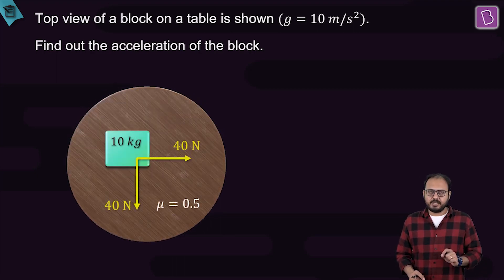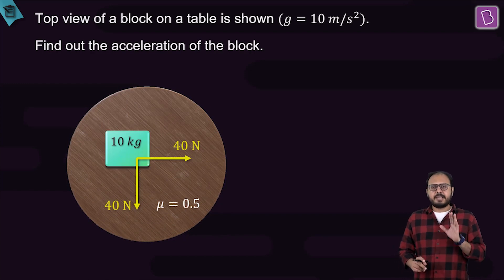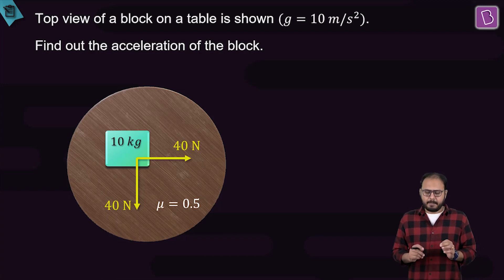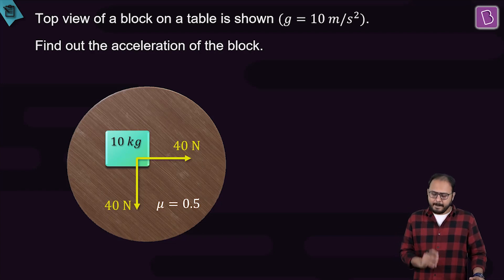This 10 kg block kept on a rough table is being subjected to two perpendicular forces: 40 newton to the right and 40 newton down. The coefficient of friction is 0.5. They didn't mention static or kinetic, so both mu static and mu kinetic are 0.5. Find the acceleration of the block.